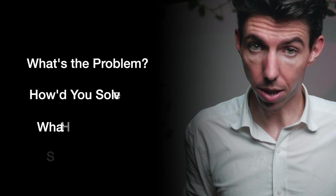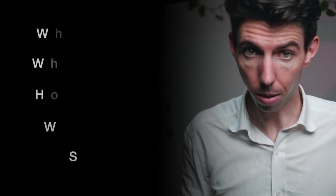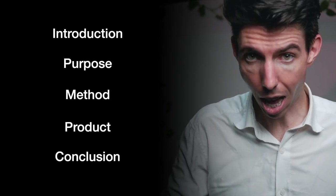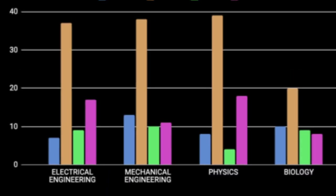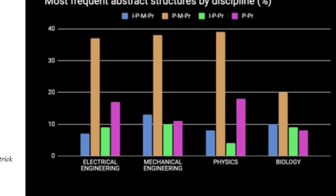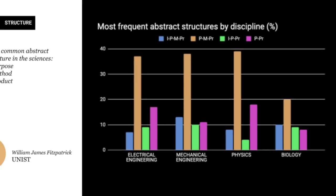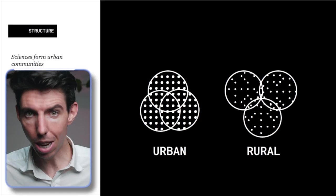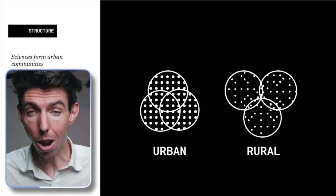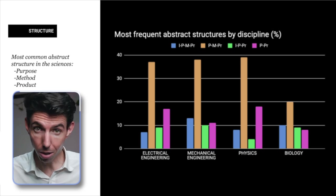So now we've identified five reader questions that we need to answer to establish trust with our reader, and their five corresponding parts in the scientific abstract. In the book Disciplinary Discourses, Ken Kylind analyzes the structure of abstracts from over 800 scientific articles. What he found is that the most common structure for a scientific abstract by far is purpose, method, product — notably missing introduction and conclusion. That makes sense because scientists and engineers work in urban environments where problems and outcomes are well established, so they don't waste ink on context. They basically just want to know: what's the problem, how did you solve it, and what did you find?